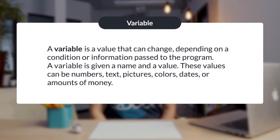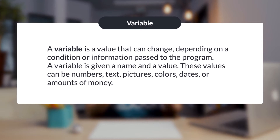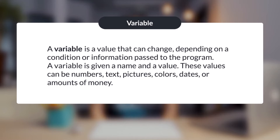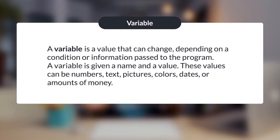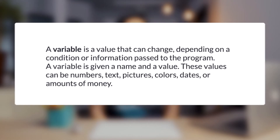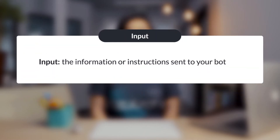In computer science, a variable is a value that can change, depending on a condition or information passed to a program. A variable is given a name and a value. These values can be numbers, text, pictures, colors, dates, or amounts of money. Variables are often used to store input and output values.